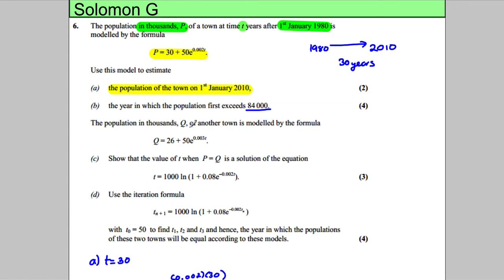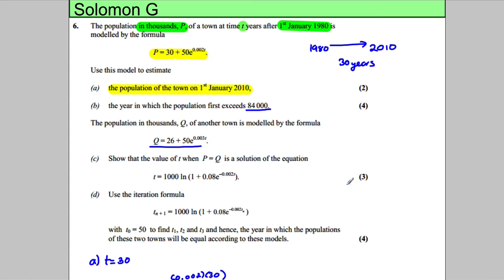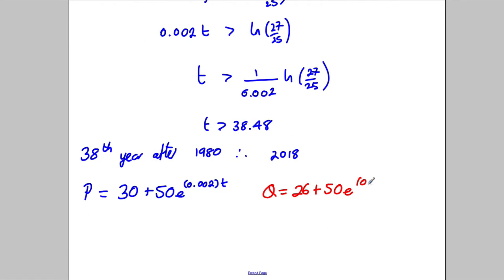Then it says the population in thousands of Q of another town is modeled by this formula. Show that the value of T when P equals Q is the solution of this. So we've got two formulas here, let's write our two formulas down. Firstly, P was equal to 30 plus 50 e to the power of 0.002 multiplied by T, and we have another formula for a different town Q, and Q is given by 26 add 50 e to the power of 0.003 times T. And we're setting P equal Q.